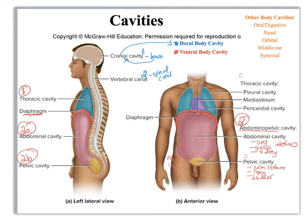Let me further subdivide the thoracic cavity. I have two pleural cavities here and here. Then I have the mediastinum. The mediastinum is technically divided up into superior, intermediate, and inferior, but for the purposes of this class, just remember mediastinum. And then I have the pericardial cavity.